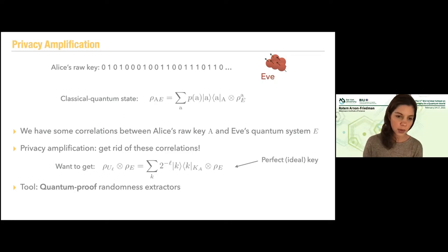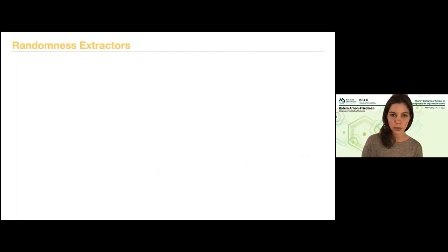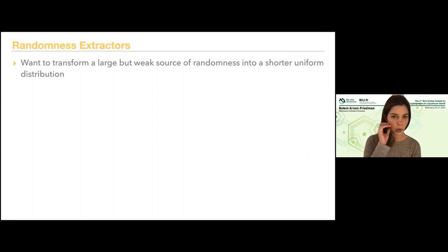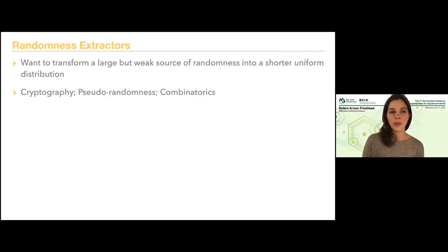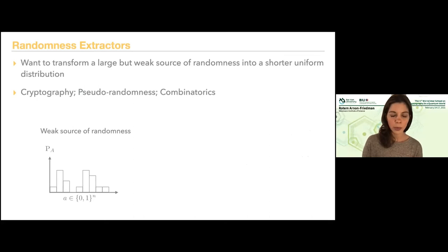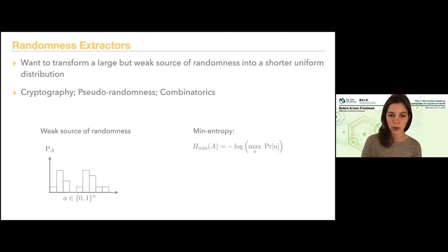We're doing this with quantum-proof randomness extractors. The goal of randomness extractors — now completely classical — is to transform a large but weak source of randomness into a shorter uniform distribution. This is used in different areas in classical computer science. A weak source of randomness is not a uniform distribution — if I have the probability for any raw data A, where A is a string in {0,1}^n, different strings have different probabilities. This is what we call a weak source of randomness.